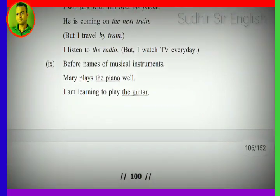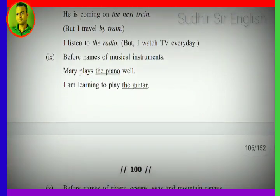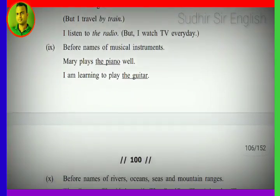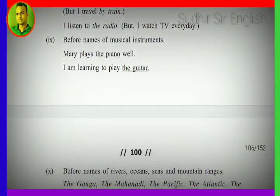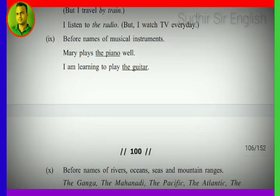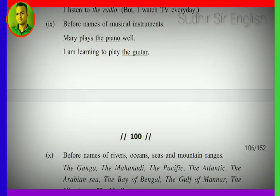Next: before names of musical instruments, we use the definite article 'the'. Examples: 'Mary plays the piano well' — the piano is a musical instrument. 'I am learning to play the guitar' — the guitar is a musical instrument.